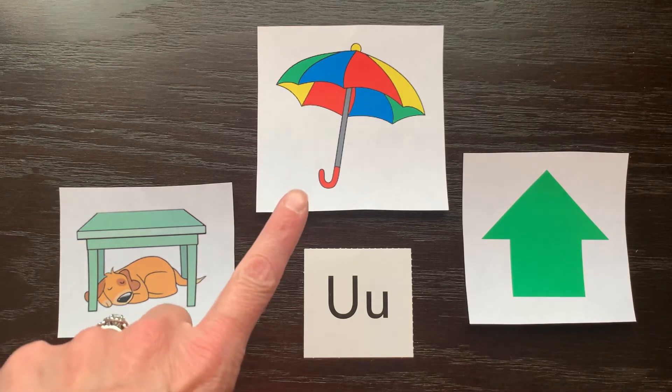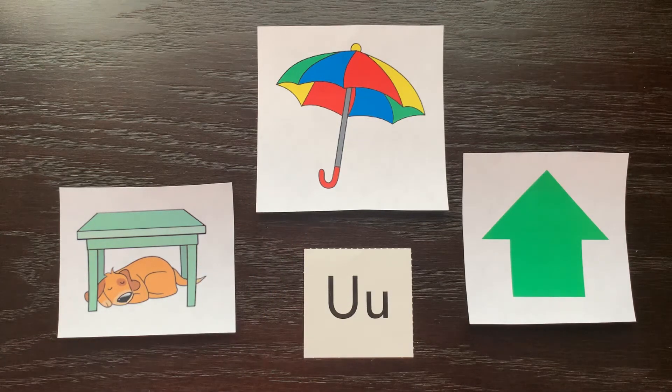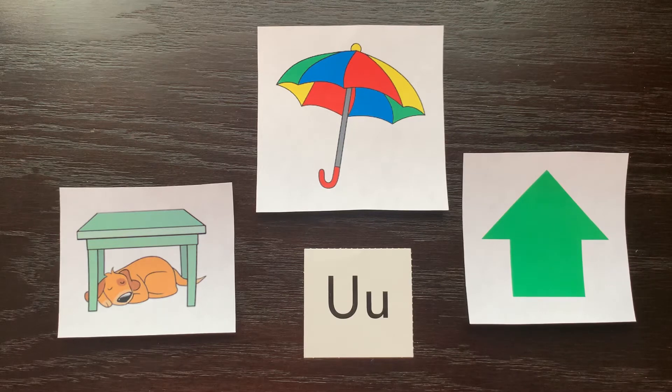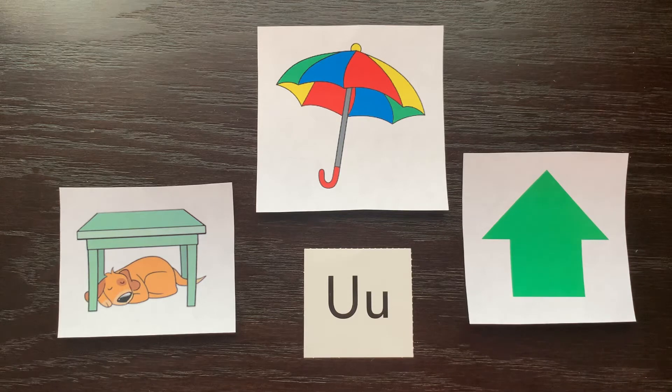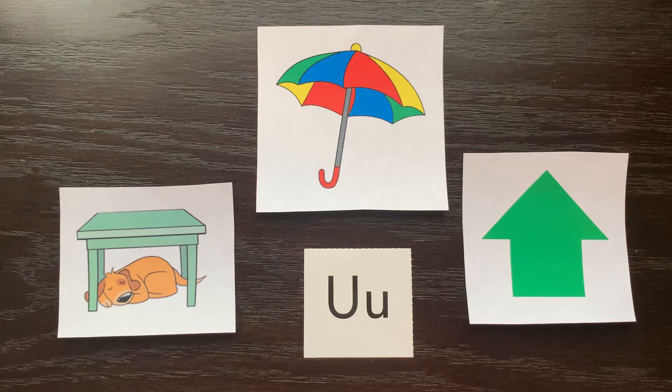This is an umbrella. Umbrella starts with the letter U, and this arrow is pointing up. Also, with the uh sound.